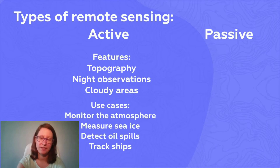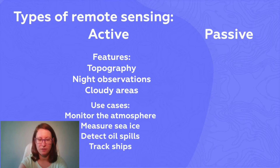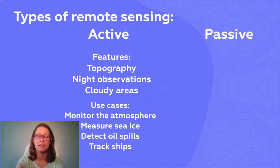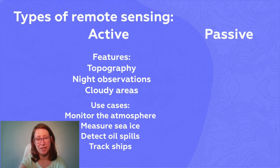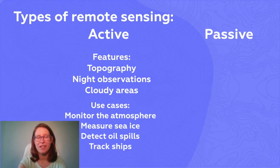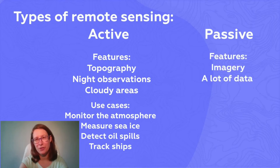We can use active sensing data to monitor atmospheric composition, sea ice, and detect oil spills or ships. Passive sensing, just like a camera, provides us with imagery of the Earth's surface.